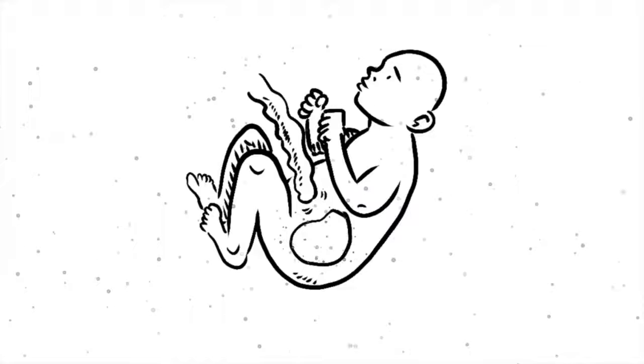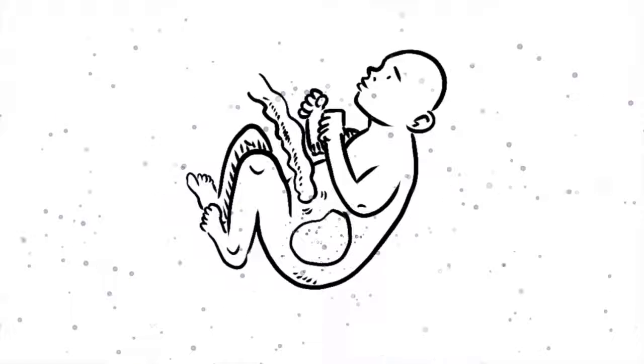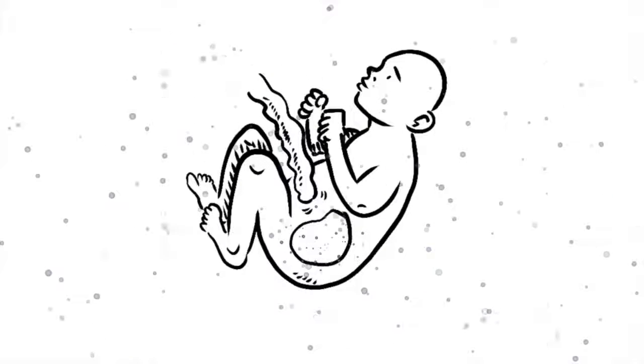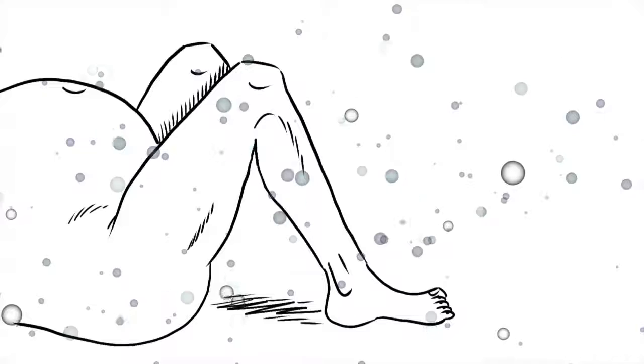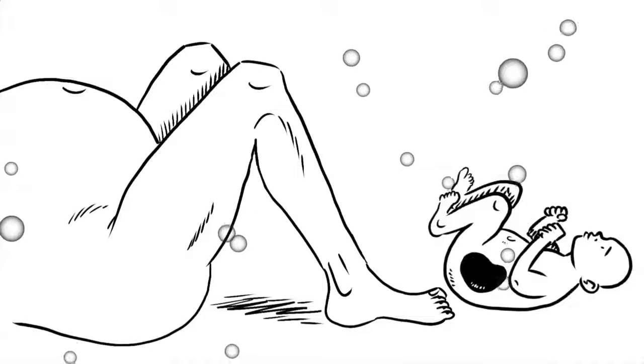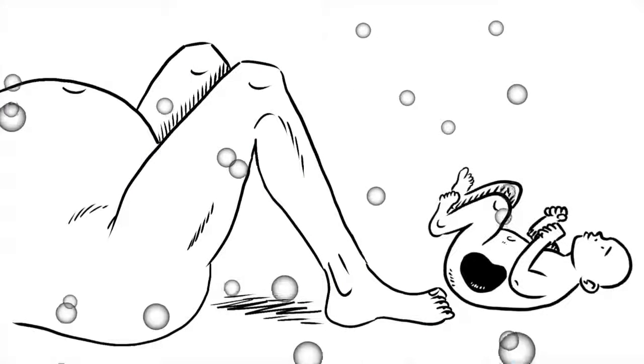The way we are born, either naturally or by caesarean, influences the type of microbes we first contact, and hence the type of microbes that will first colonize our bodies. Babies born naturally come into contact with microbes found in the mother's intestinal and vaginal fluids.